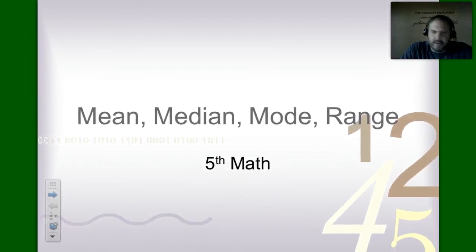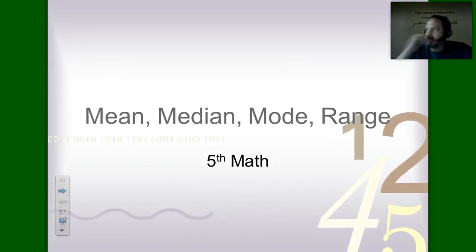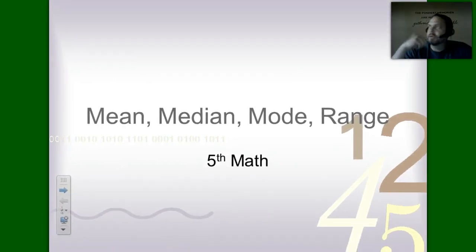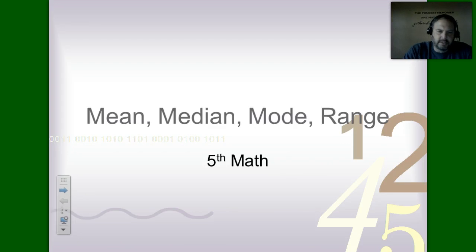Range is another number that helps us define a group. It takes the biggest number in a data set and the smallest number in a data set, we subtract these numbers, and that's what the range of the data set is.